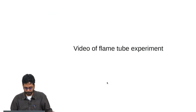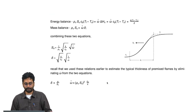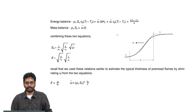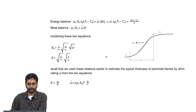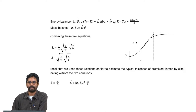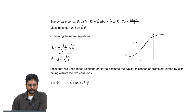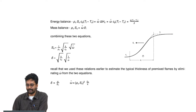Returning to the flame tube experiment seen yesterday: starting from the steady one-dimensional energy equation and integrating it from negative infinity to positive infinity, the gradients at the two extremes are zero, so all derivatives with respect to x drop out. You are left with only two terms. One is the heat release due to chemical reaction, which is ω̇ Δhc for a one-step irreversible reaction — the heat released in the flame zone where temperature increases because of chemical reaction.